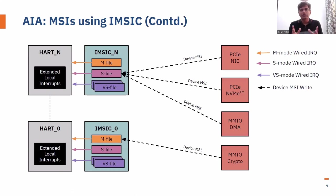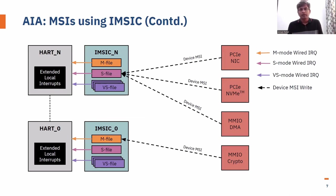This figure shows a pictorial representation of what I just described. As you can see, we have a separate IMSIC instance next to each hart, and different devices — platform or PCI devices — can directly write MSIs to the different files. A convention in this figure: solid arrows represent actual hardware lines or signals, and dotted arrows represent MSI writes. We'll follow this convention in coming slides. This figure largely shows how IMSIC works on an MSI-only system.